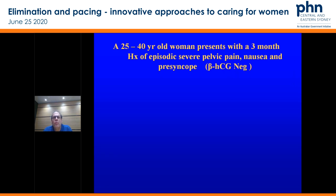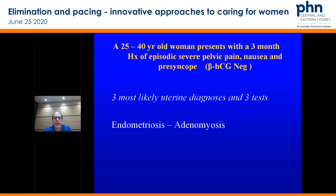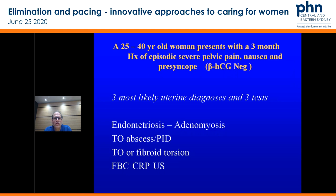A 25 to 40-year-old woman presents with a three-month history of episodic severe pelvic pain, nausea, and presyncope — HCG negative. Three most likely diagnoses and tests: endometriosis and adenomyosis, a tubo-ovarian abscess or PID, and a tubo-ovarian or fibroid torsion. Do your blood count, CRP, and ultrasound and you're going to pretty much get your diagnosis.